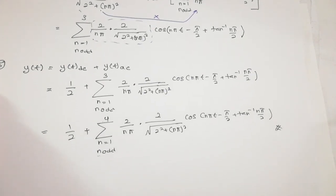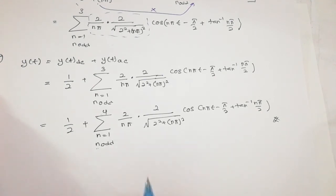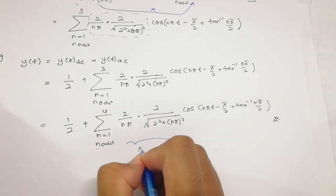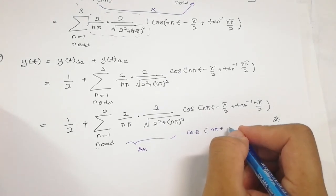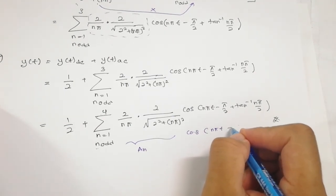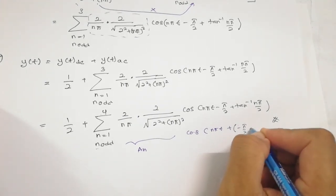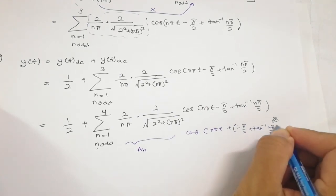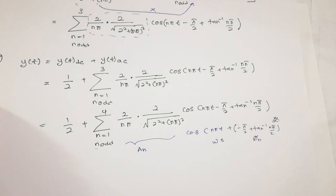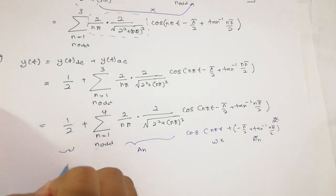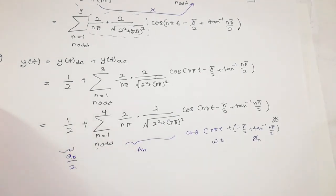This is the amplitude-phase form where you have AN, then cos of N·pi·t (your omega·t), and the phase is −pi/2 plus tangent⁻¹(N·pi/2), with 0.5 as the DC component. You can try this yourself at home. Thank you for watching and see you again, bye.